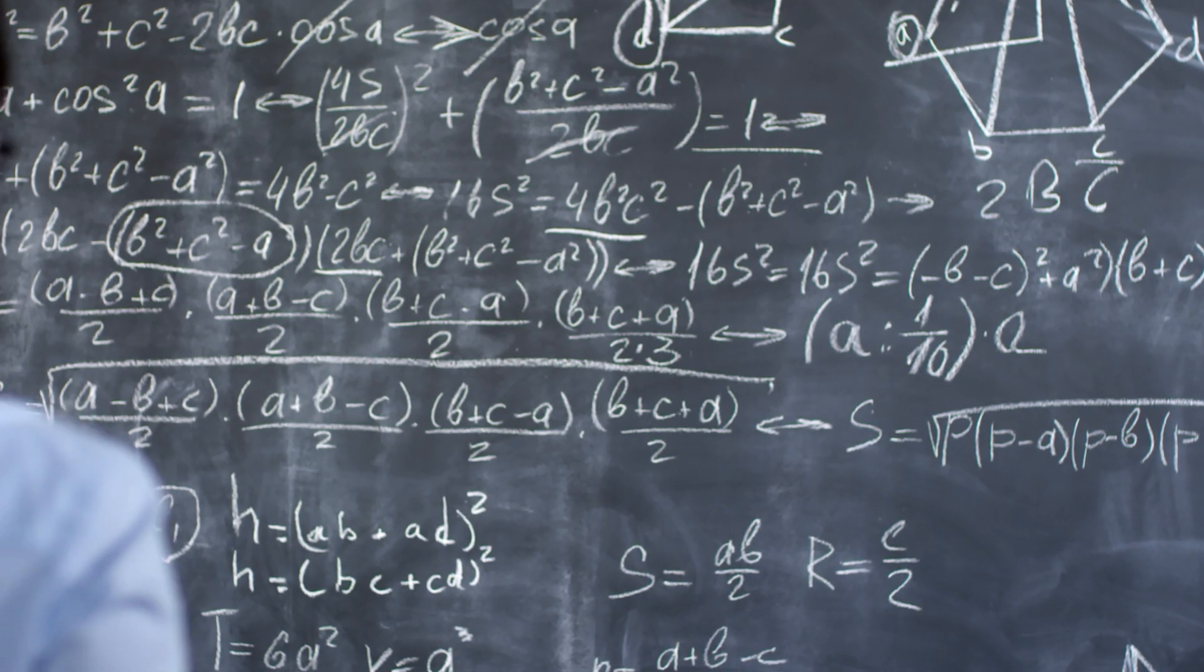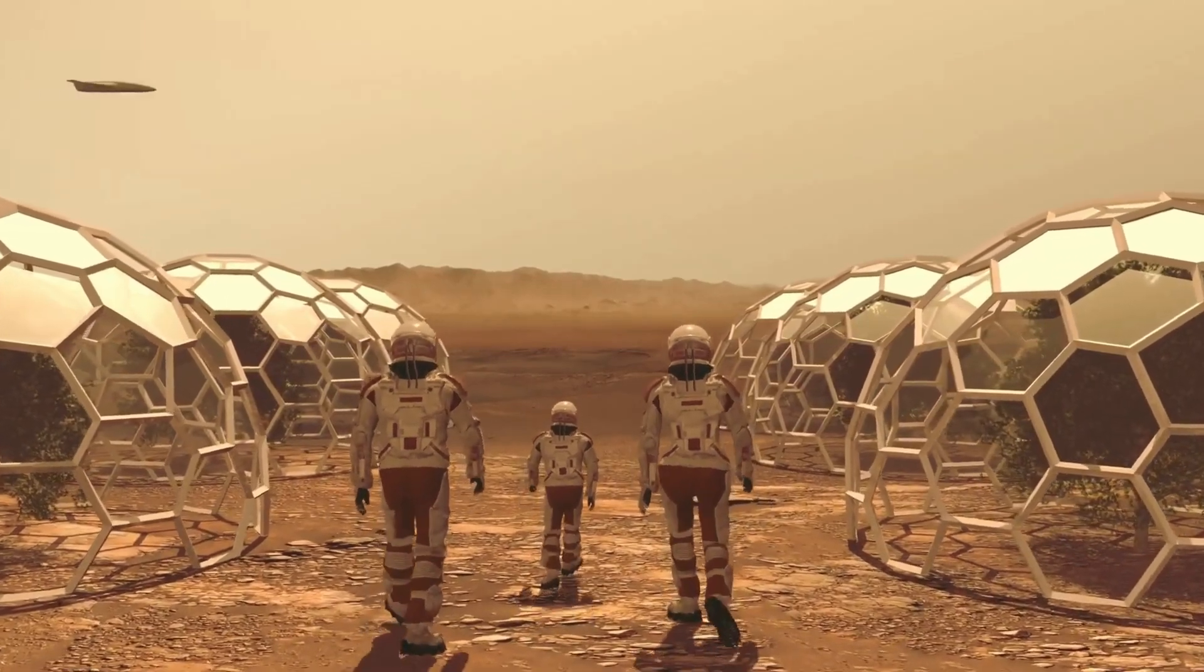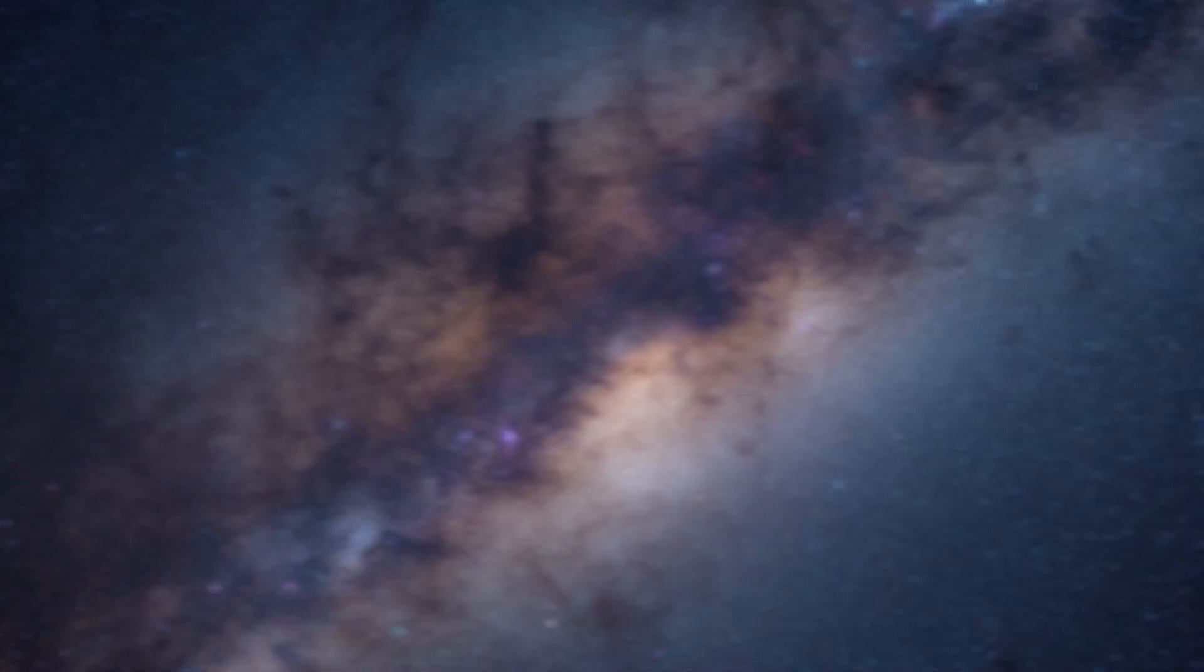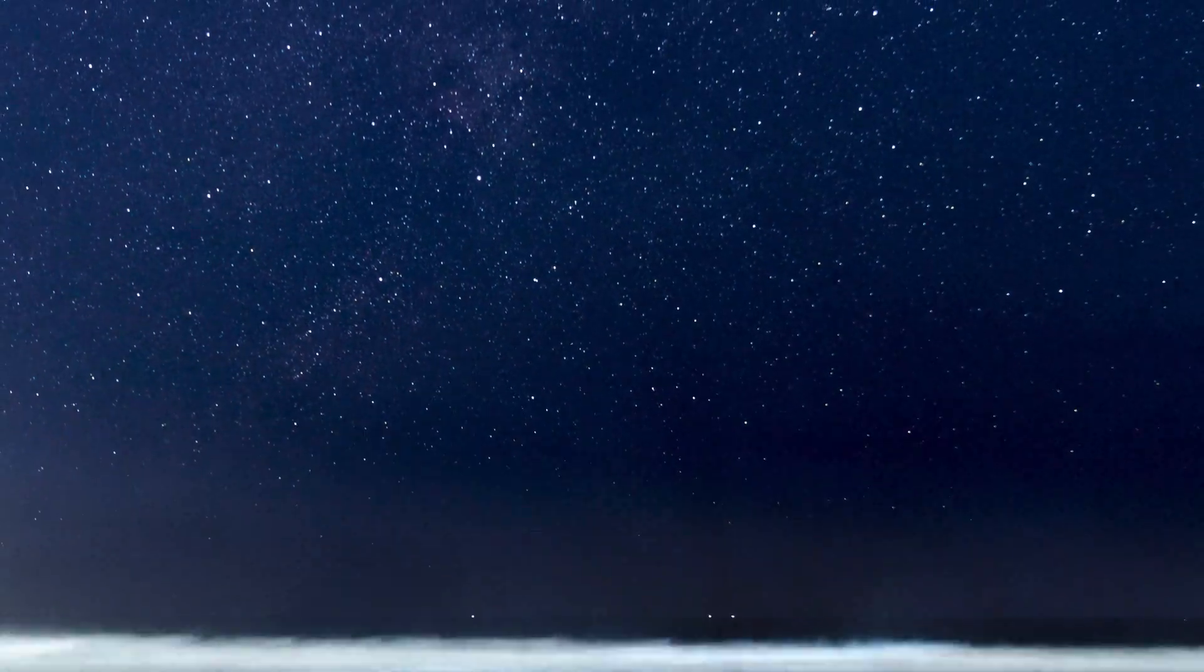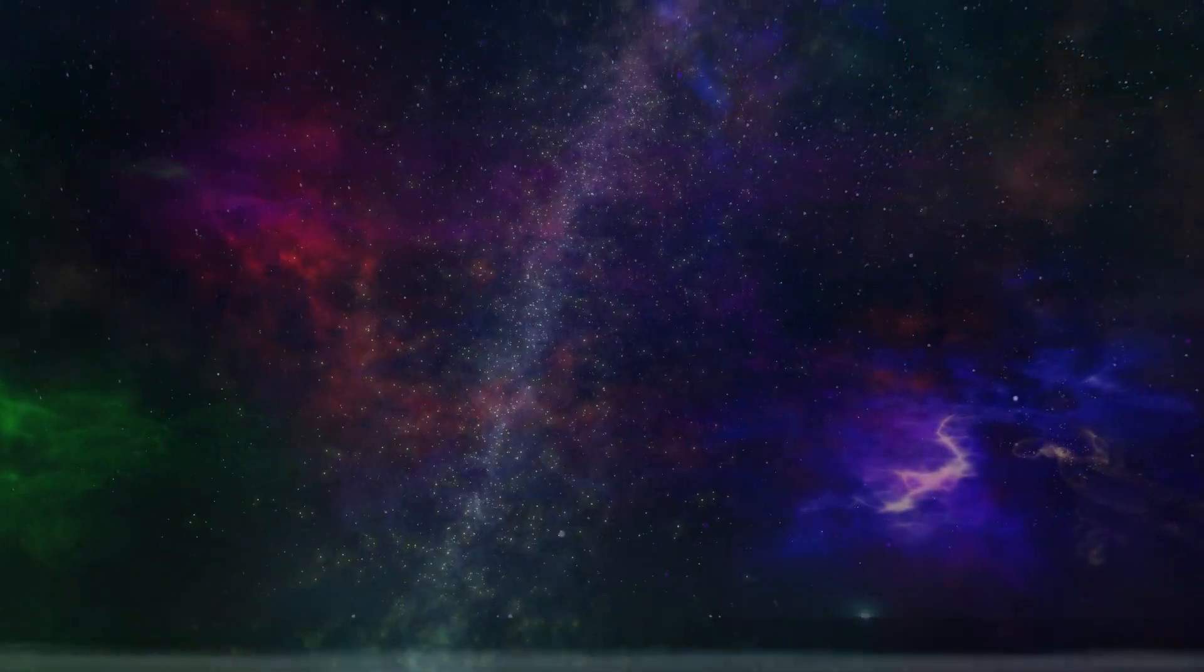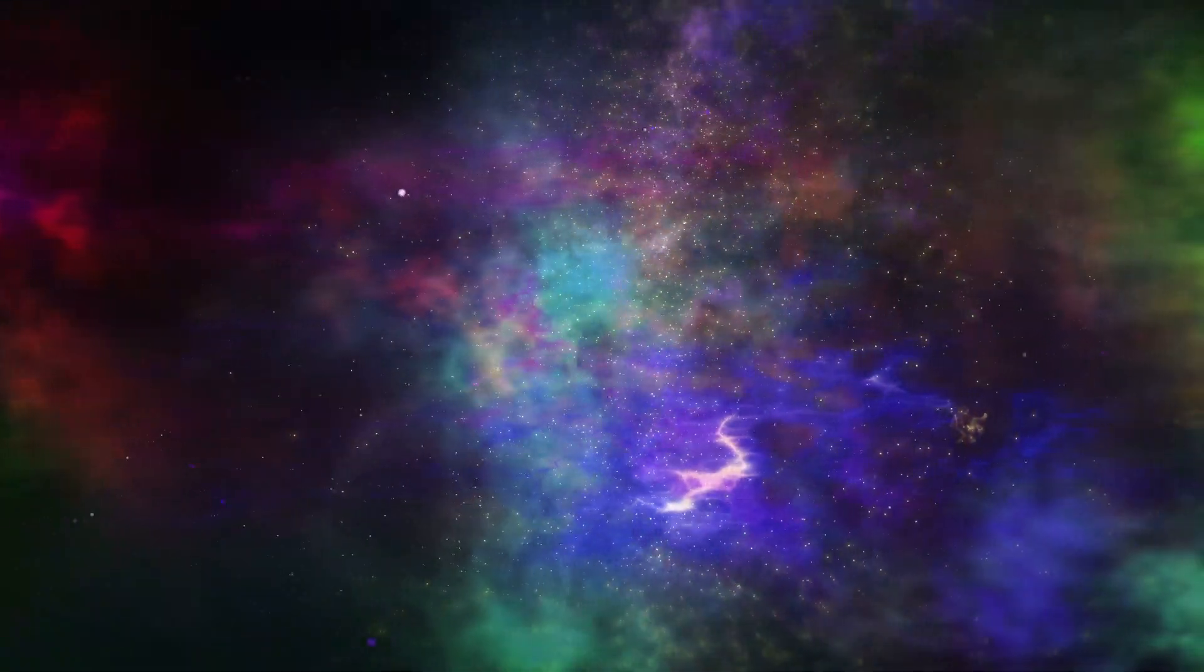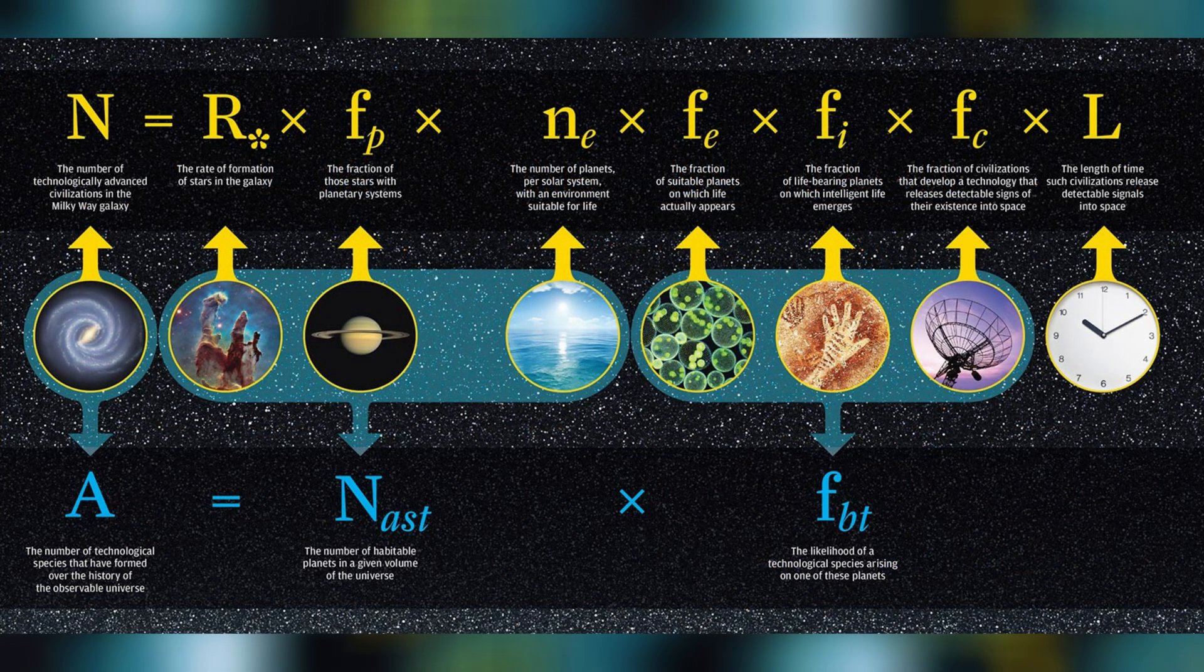The Drake Equation has long been a topic of fascination for scientists and enthusiasts alike. Proposed by astrophysicist Frank Drake in 1961, it seeks to estimate the number of active extraterrestrial civilizations in our galaxy. At its core, the equation is a way to quantify the variables that play into the existence of intelligent life beyond Earth. These factors include things like the rate of star formation, the fraction of stars with planets, and the probability that life will develop on those planets. However, it's important to note that this equation is not meant to provide a definitive answer about whether or not aliens exist. Instead, it serves as a framework for thinking about and discussing these possibilities.